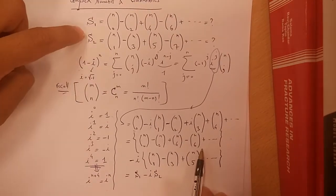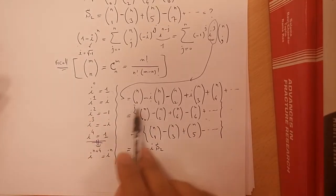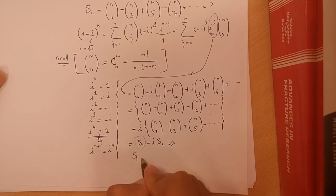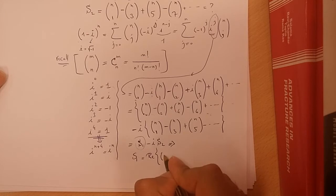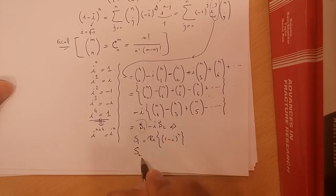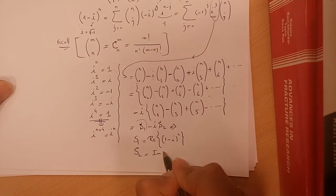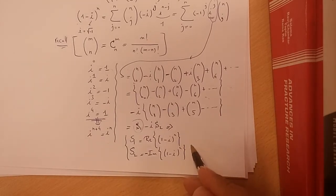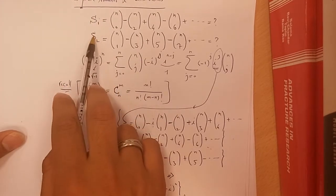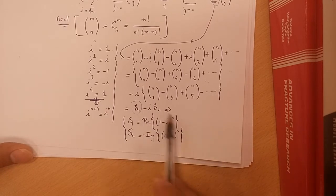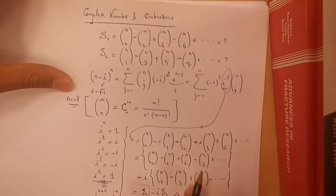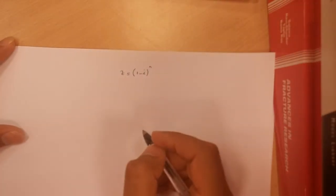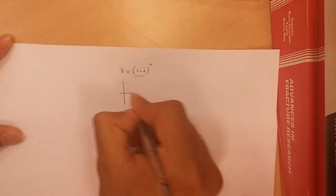We observe that S1 is exactly the real part of the complex number (1 - i)^N, and the series S2 is equal to minus the imaginary part of (1 - i)^N. So the question of calculating these two series reduces to evaluating the real and imaginary parts of this complex number, which is straightforward. Let Z = (1 - i)^N.